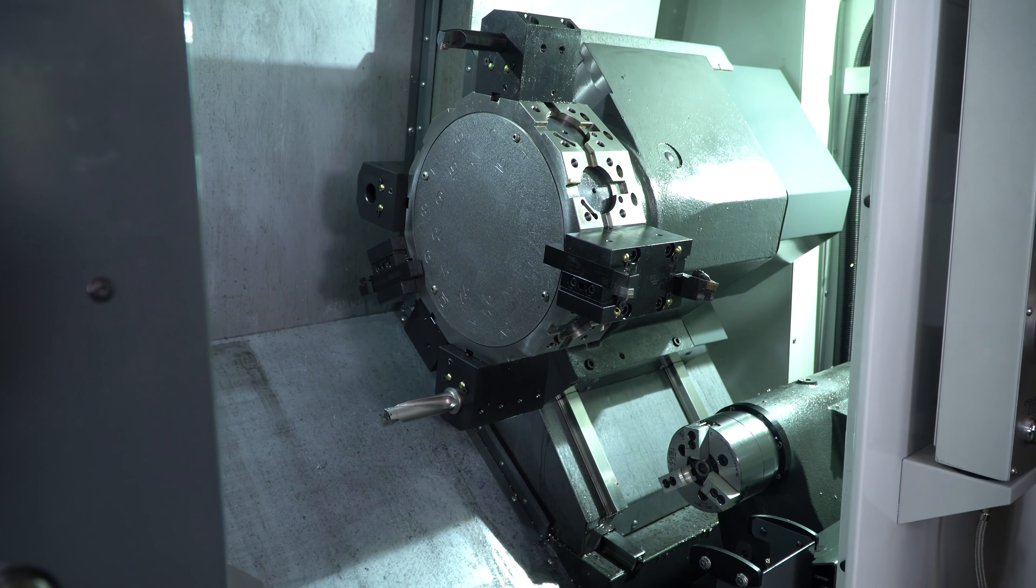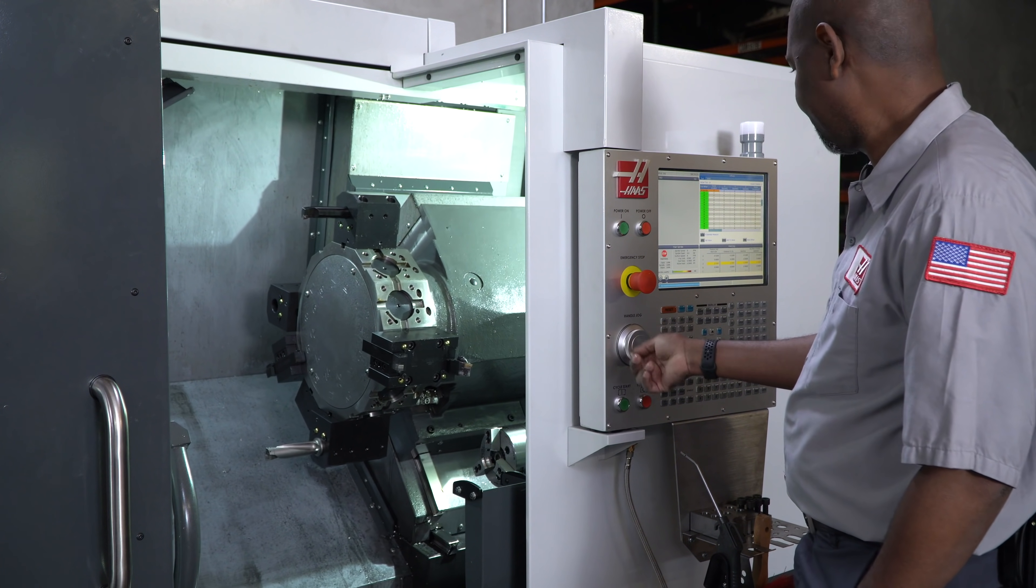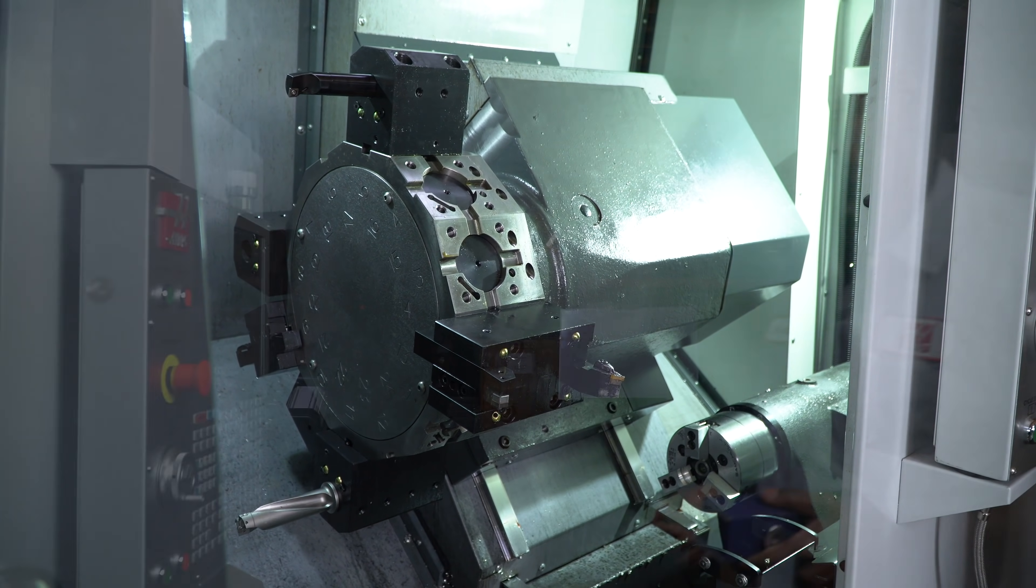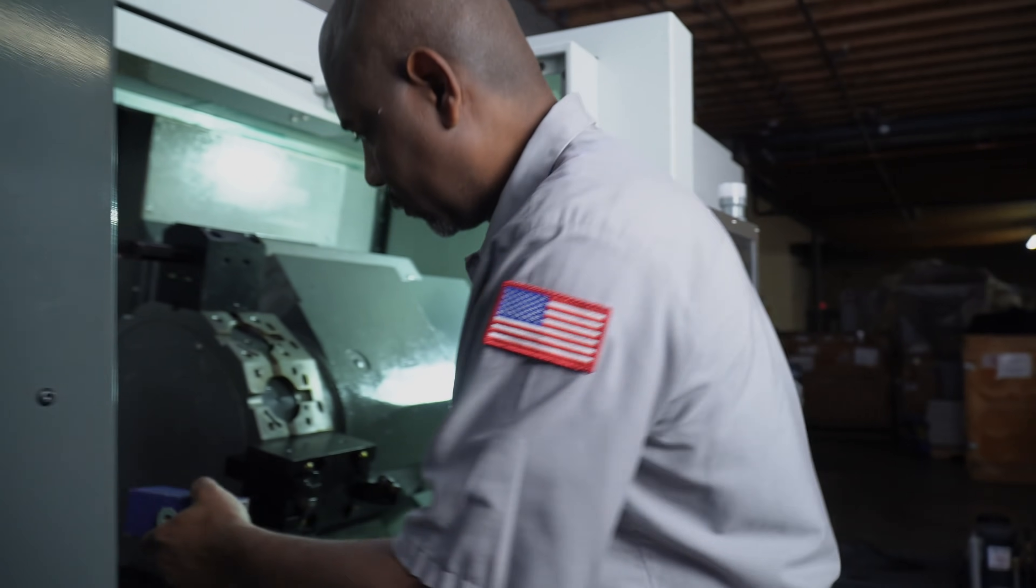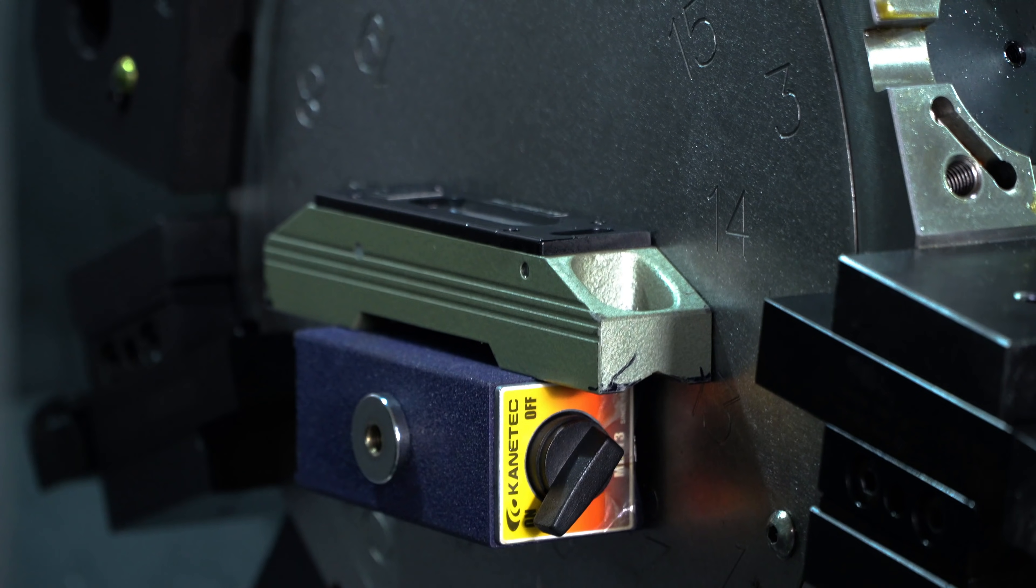Once the level is calibrated, jog the X axis to the middle of travel and the Z towards the operator door so you can gain access to the turret. Place the large mag base on the face of the turret. Take the level you have just calibrated and place it on top of the mag base.